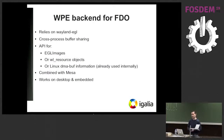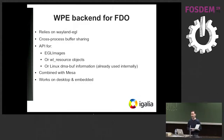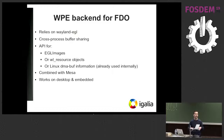I'm going to talk about the one specific backend called FDO. Why is it called FDO? Because it relies on a lot of libraries from the FreeDesktop project. It depends on the Wayland EGL API, and it provides cross-process buffer sharing support. It has API for EGL images, Wayland resources, and also Linux DMABuf support. Right now it's internal only, but we plan to expose it at the API level as well.